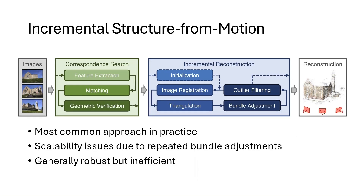The most widely deployed methods by far fall under incremental methods. After feature extraction and matching, this method proceeds by adding images incrementally with interleaved bundle adjustment. This process, however, leads to rapidly increasing computational complexity. Although these methods are generally robust, they are often inefficient.